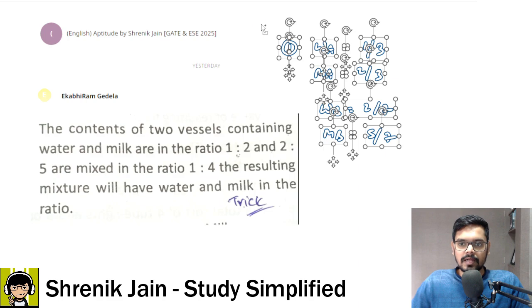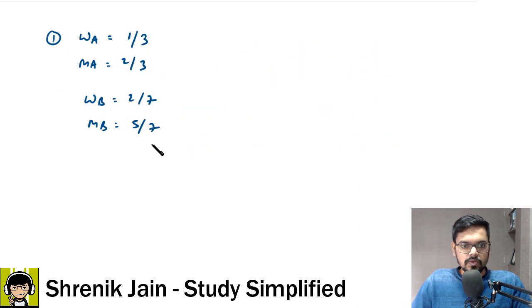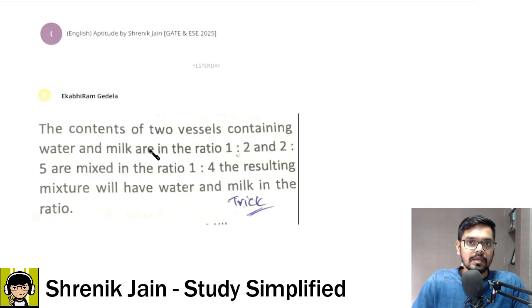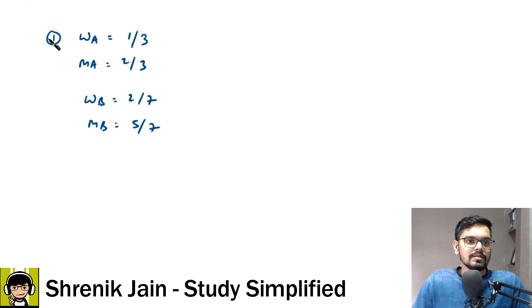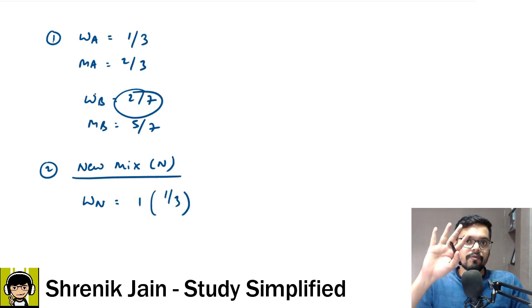So let me copy this to the next slide so that I can further say that these vessels are not mixed in the ratio of 1:1. These are mixed in the ratio of 1:4. If that is the case, then the new mixture, let us say the new mixture as N. The new mixture will have the water in B had 4.